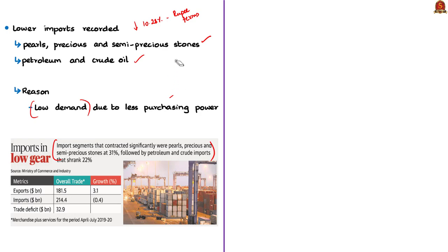Another reason for the reduction in imports — which is a positive impact — can be more indigenous production. If you can produce a particular product in India and it is locally available, you need not depend on imports. For example, if India becomes self-reliant on crude oil it would not need to import that product anymore, so imports would drastically reduce. But what we saw in the news article is a negative impact — because of low purchasing power, demand has gone down. Now have a look at the practice question.